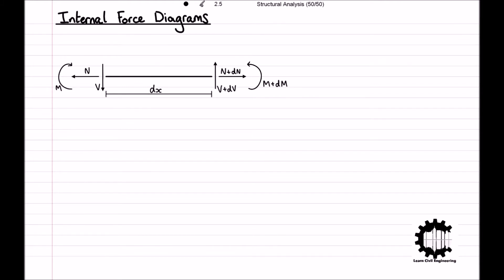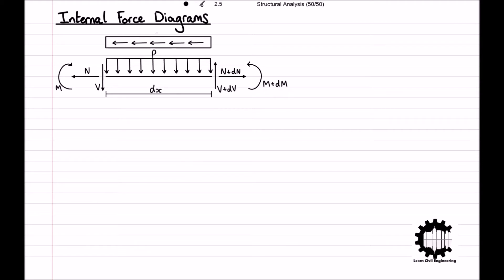Finally, we will consider that distributed loads are being applied to the section: a distributed load perpendicular to the bar denoted p, and a distributed load parallel to the bar denoted n. Note that because the length of the section of the bar we are considering is tending to zero, any change in the distributed load will be negligible and so we can assume that the distributed loads are constant.